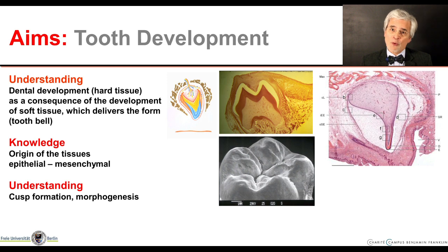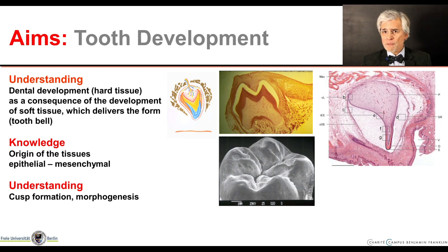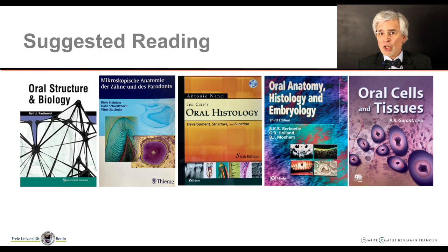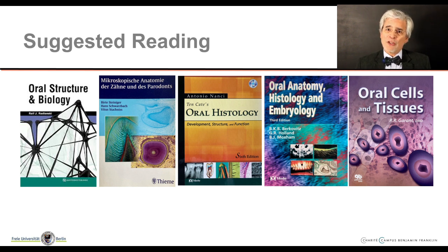As learning objectives, we plan to create an understanding of which soft tissue developmental processes are necessary for formation of hard structures such as enamel, dentin and cementum. We also want to gain knowledge about where the individual tissues involved in these processes come from, and of course we are interested in how teeth get their cusps. There are good textbooks on this topic, and all the contents of this lecture, including pictures and explanations, can be found in depth in the textbook Oral Structure and Biology. Page numbers are included in the top left corner of the slides.